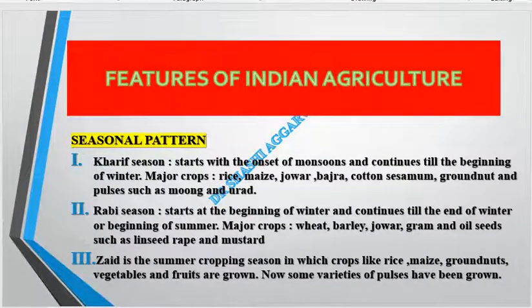Indian agriculture also has distinct cropping seasons. The Rabi season starts in winter and ends in spring, with crops like rape and mustard. The Kharif season is the summer cropping season where rice, groundnut, vegetables, and fruits are grown.